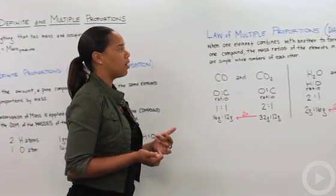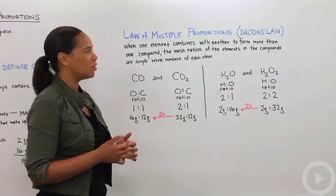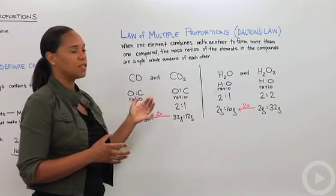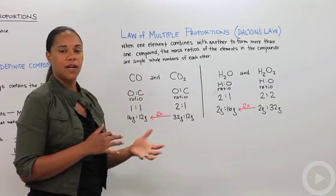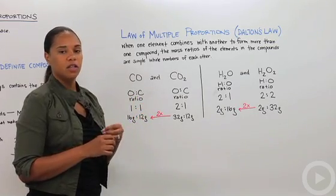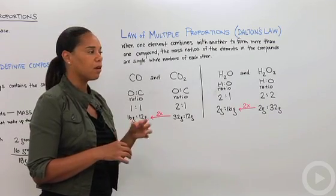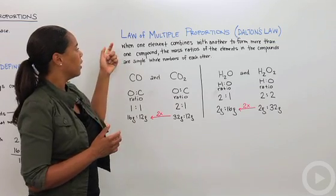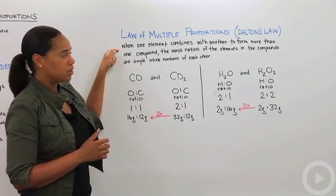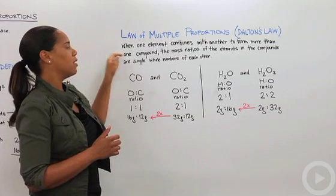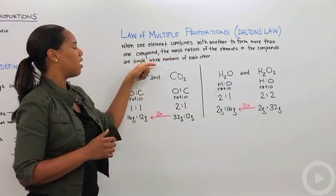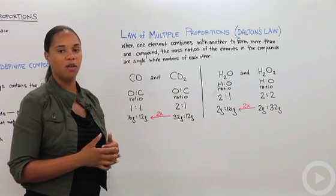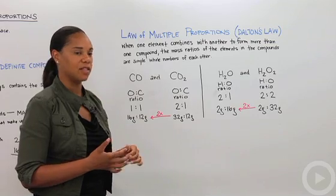Let's move on and talk about the law of multiple proportions, which is a little more difficult maybe. It's also known as Dalton's law. This comes into play a lot when you're doing stoichiometry, when you're balancing equations and trying to figure out molar masses of different compounds that are involved in a reaction. This states that when one element combines with another to form more than one compound, the mass ratios of the elements in the compounds are simple whole numbers of each other. Again, the words probably don't mean a whole lot, but let's work through a couple of examples.